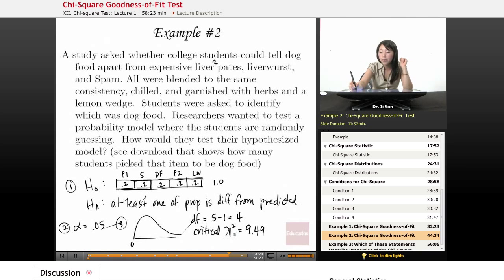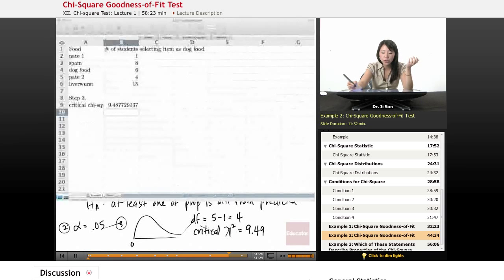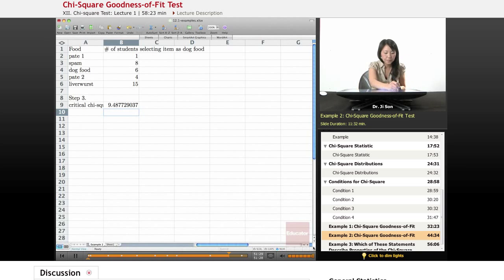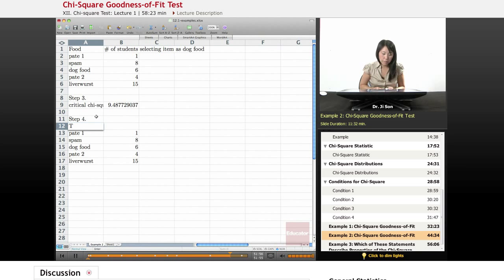So once we have this, now we could start working on our actual data, our actual sample. So step four is we need to find the samples chi-square. And in order to do that, it helps to draw out that table. So the table might look something like this. And this is the type of food. That's the category.